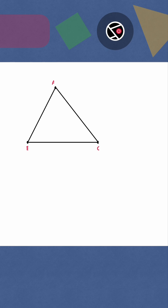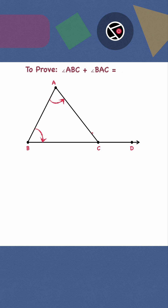We have a triangle ABC. Extend BC to point D. We have to prove that angle ABC plus angle BAC equals angle ACD. Let us label these angles as X, Y, Z and W.